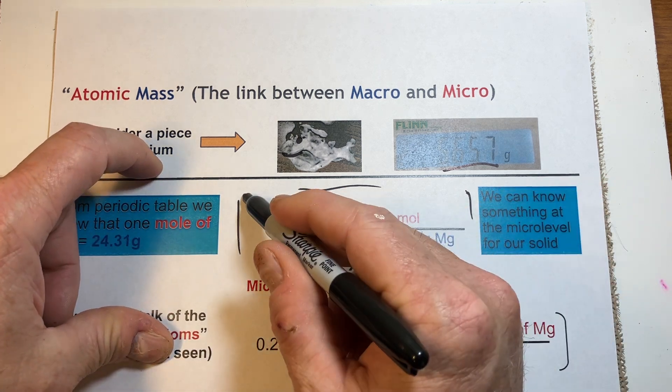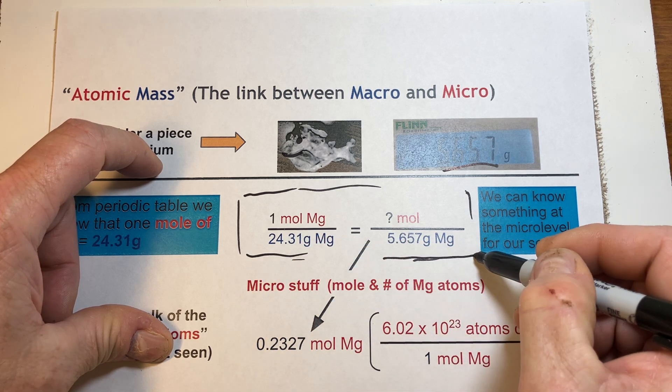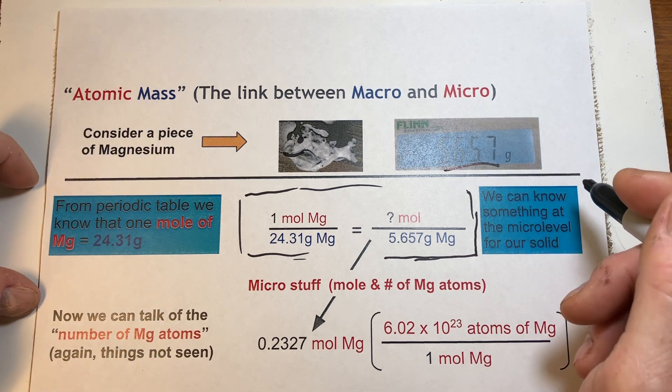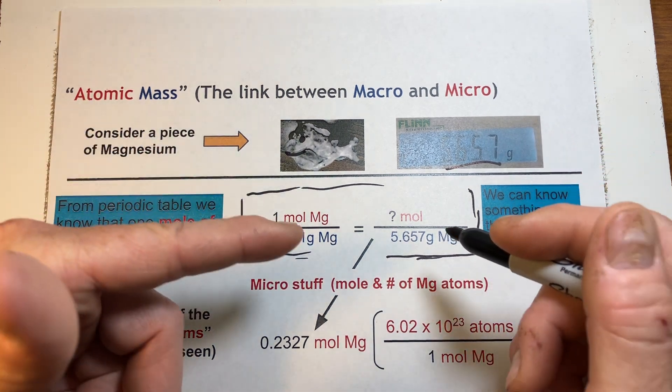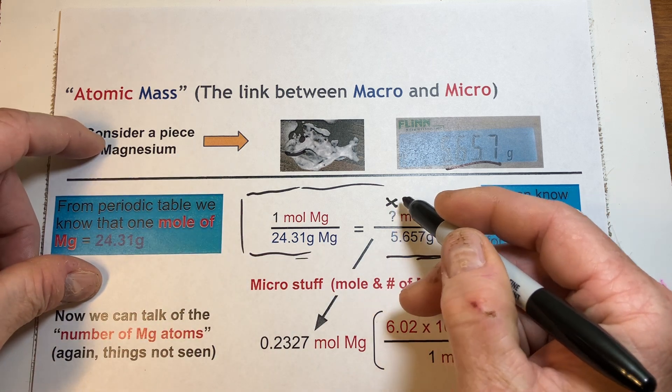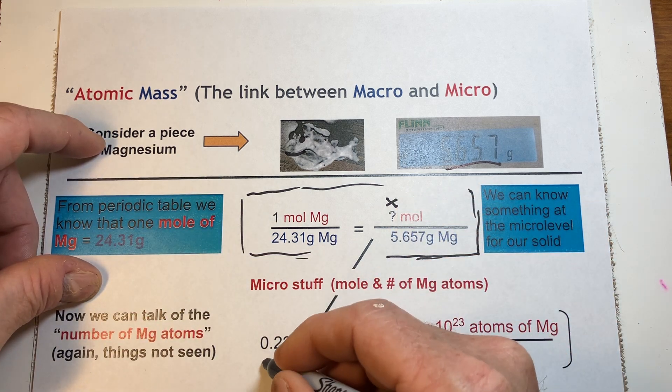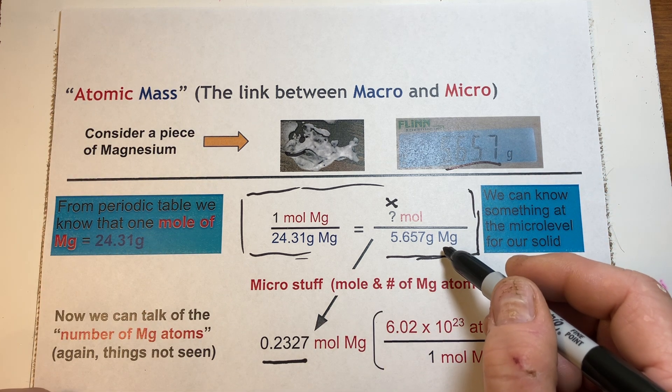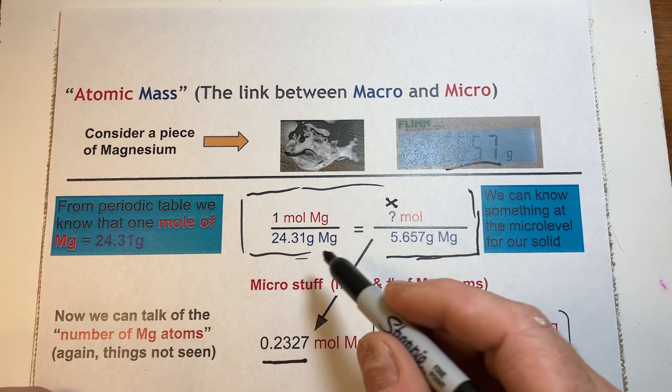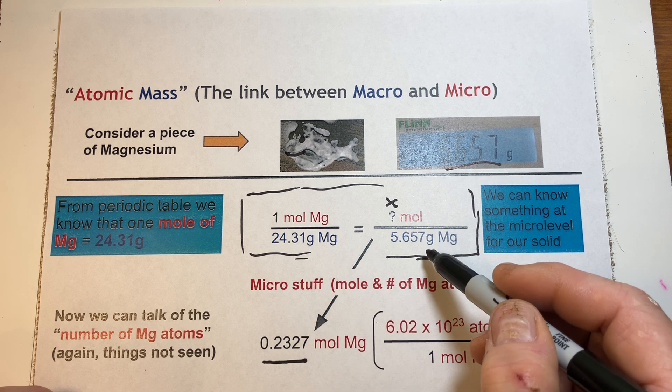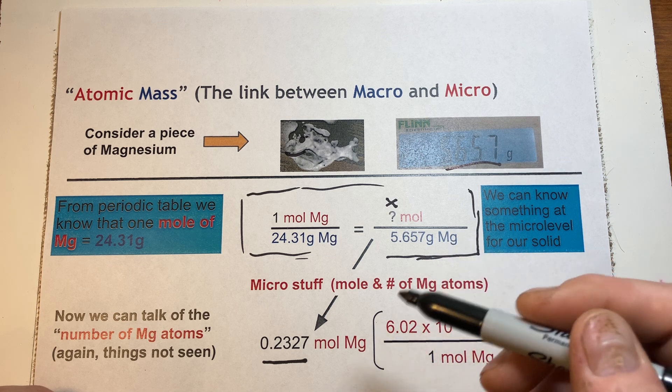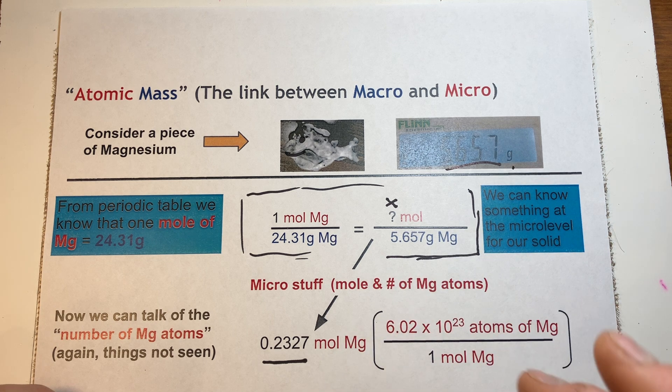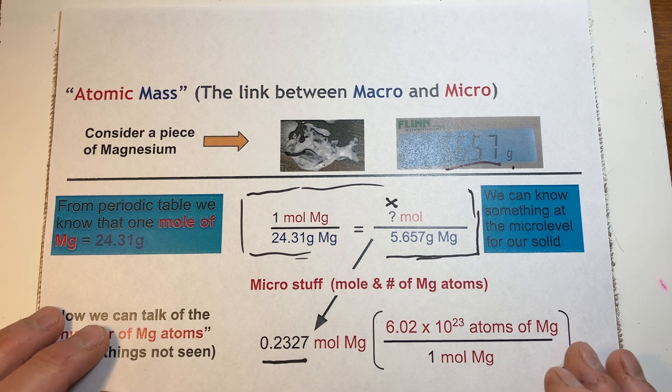So, again, this is sort of that changing the ratio type of approach, where we could just sort of set this as X and solve for it by cross-multiplication. If we do that through cross-multiplication, solve for this question mark or solve for X, we can find that we have 0.2327 moles of magnesium for this amount of magnesium. Not for the 24, but for the 5.657. And we could stop there. We could go from grams to moles. But we could also go further if we wanted to.